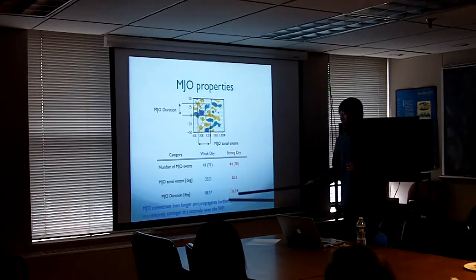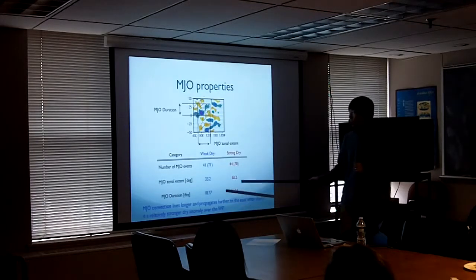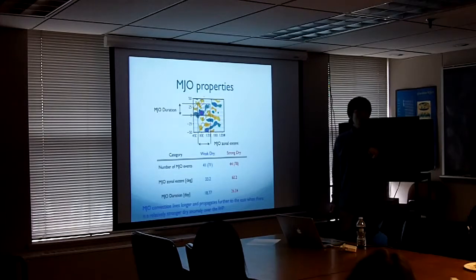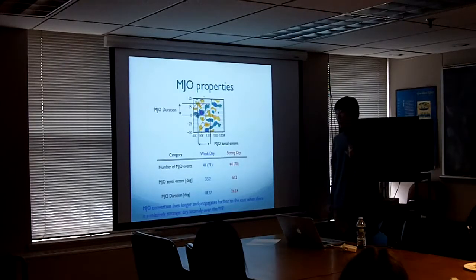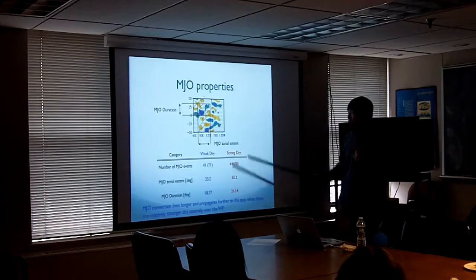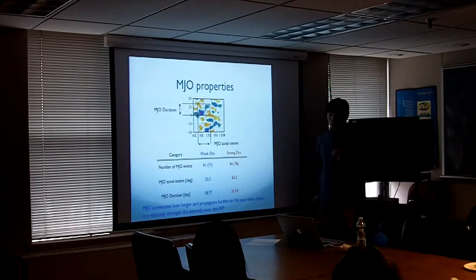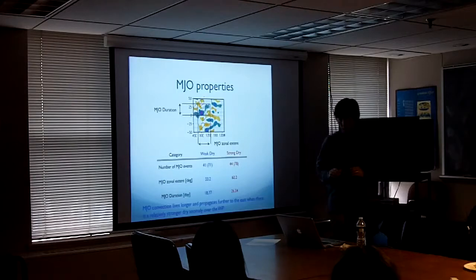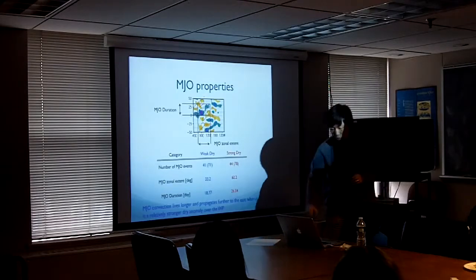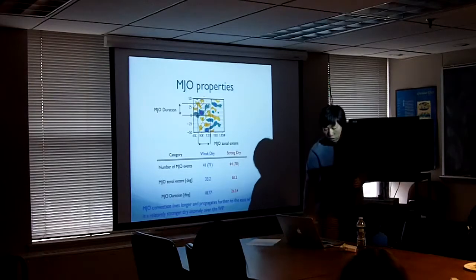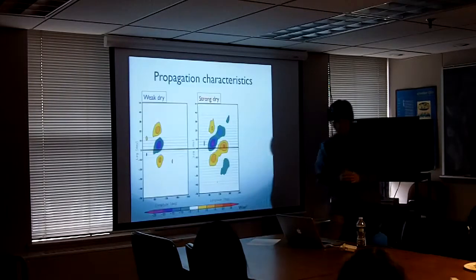The conclusion from this table is that MJO convection over the Indian Ocean lives longer and propagates farther to the east when there is a relatively stronger dry anomaly over the Western Pacific.